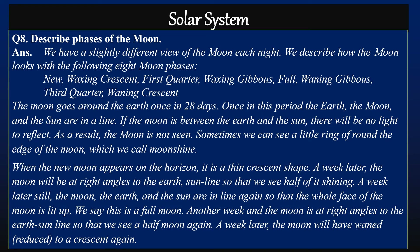Once in this period, the earth, the moon, and the sun are in a line. If the moon is between the earth and the sun, there will be no light to reflect; as a result, the moon is not seen. Sometimes we can see a little ring around the edge of the moon, which we call moonshine. When the new moon appears on the horizon, it is a thin crescent shape.